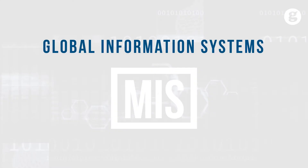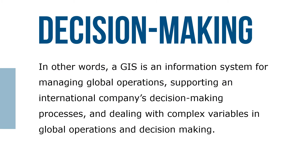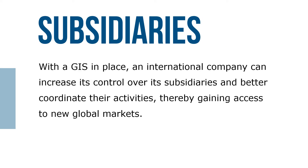Let's take a look at Global Information Systems. A GIS is an information system that works across national borders — in other words, an information system for managing global operations, supporting an international company's decision-making processes, and dealing with complex variables in global operations and decision-making.